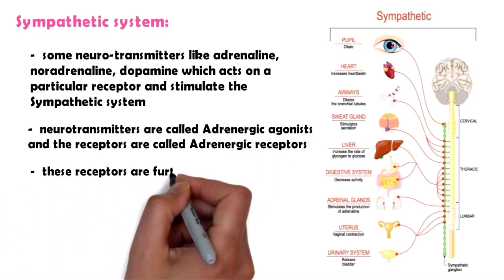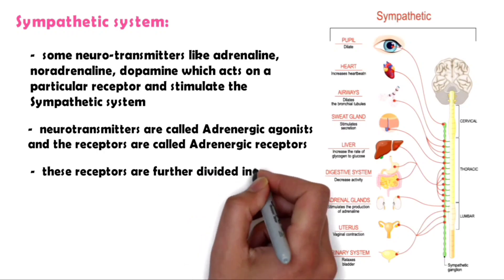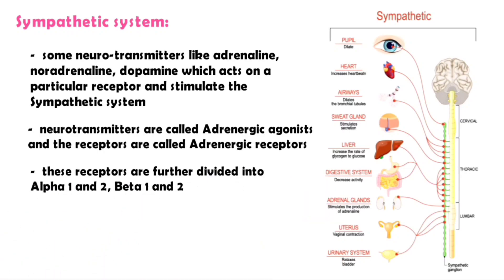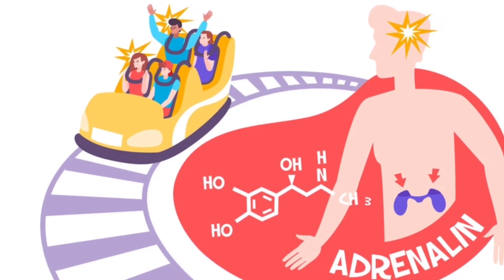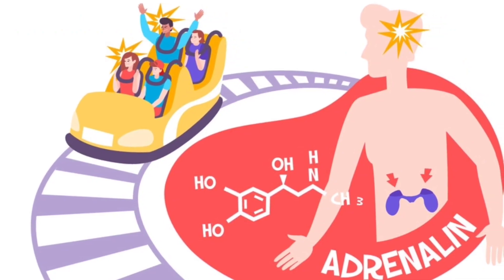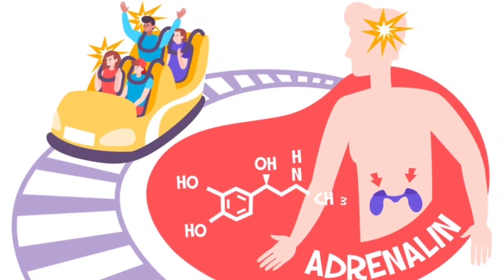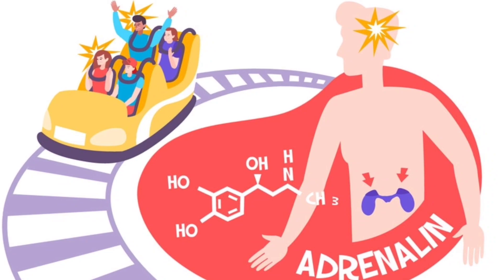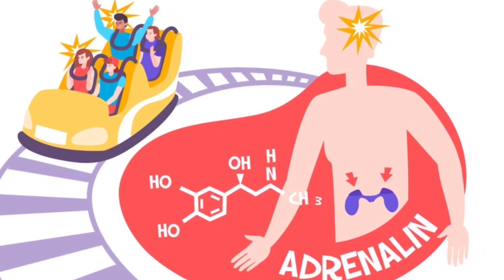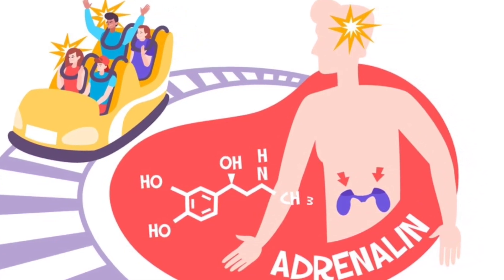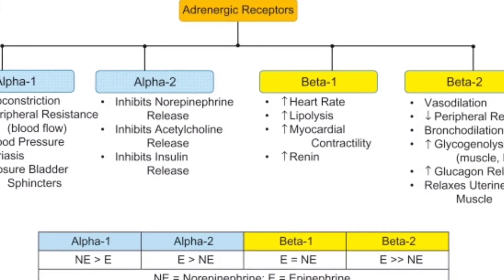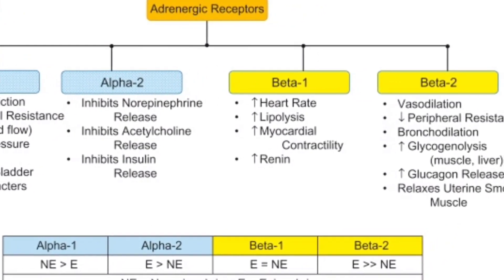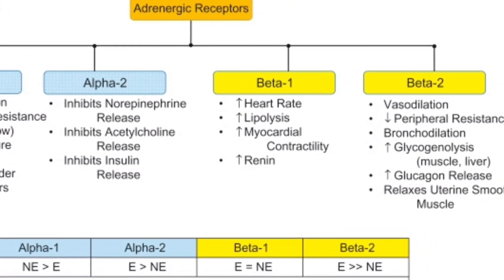According to the site of action, these receptors are further divided into alpha-1 and alpha-2, and beta-1 and beta-2. In short, adrenergic drugs stimulate the sympathetic nervous system and are used in emergency conditions. Coming to adrenergic receptors, as mentioned, they are divided into alpha-1 and 2, and beta-1 and 2, and each receptor has a specific action as shown.